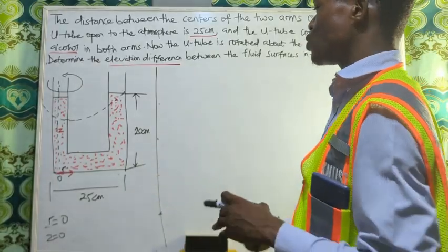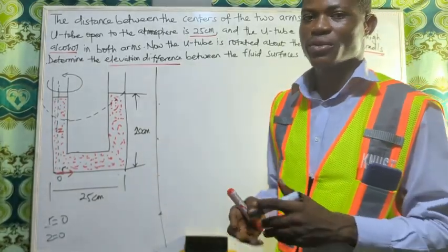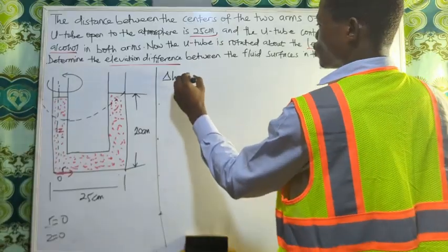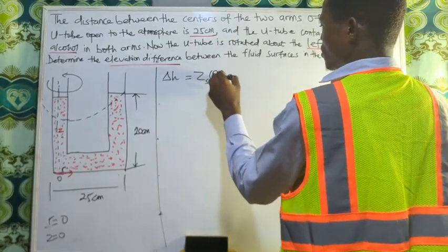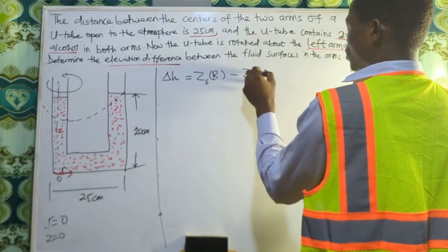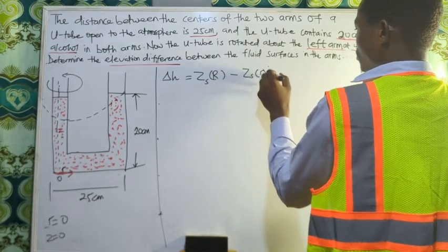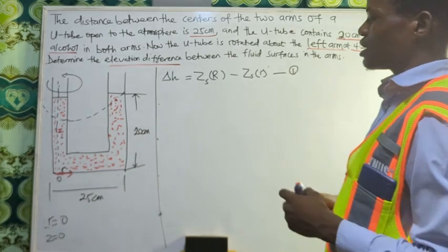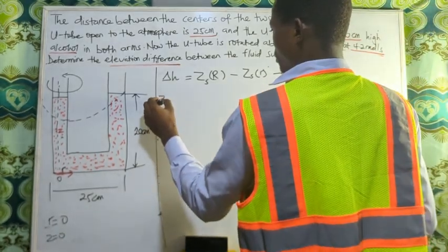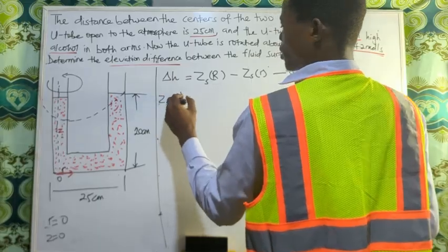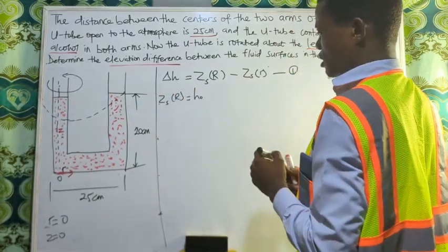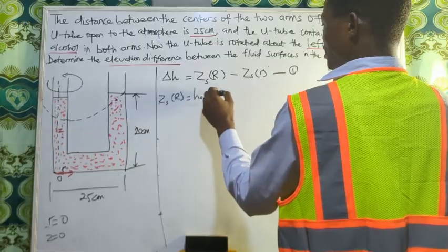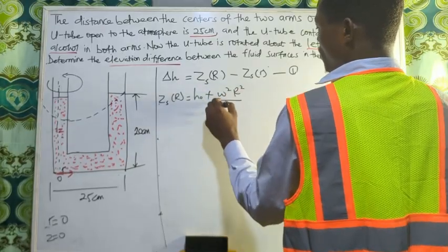To help us find the elevation difference, we're finding the free surface at the bigger side of the radius and the free surface at the smaller side. The elevation difference should be Δh = z_s(big R) - z_s(small r). Let's name this equation one. Now z_s(big R) is going to give us h₀, which is our original height of the fluid, plus ω²R²/4g.